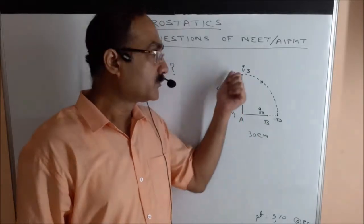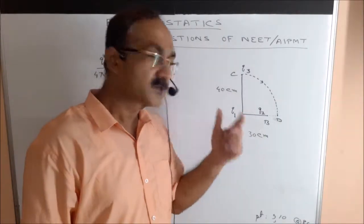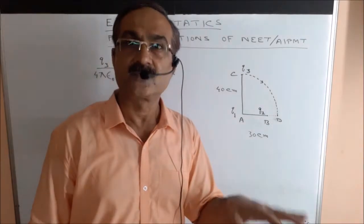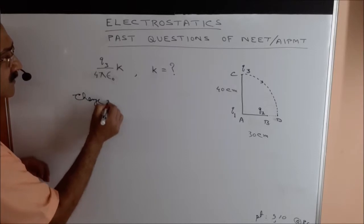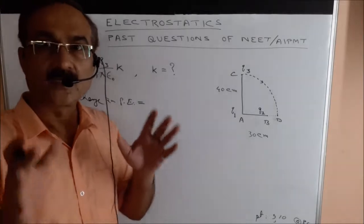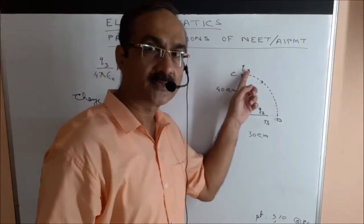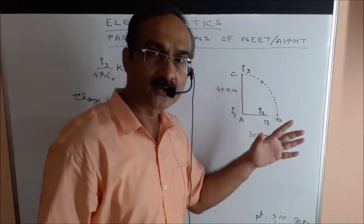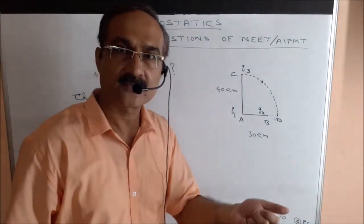In both the initial and final configurations, the potential energies of Q1 and Q2 remain the same. So the change in potential energy of the system is only due to the change in potential energy of Q3 between its two positions. Let's do the calculations now.